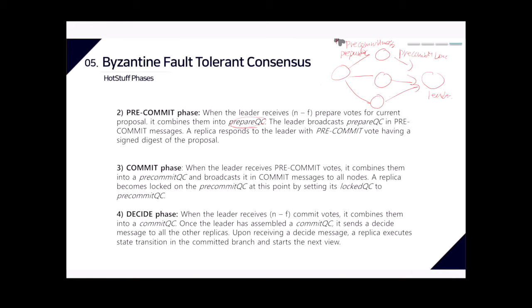The Commit phase is similar to the Pre-Commit phase. When the leader receives pre-commit votes, it combines them into a pre-commit QC and broadcasts it in a commit message to all nodes. A replica becomes locked on the pre-commit QC at this point by setting its locked QC to the pre-commit QC. In the Decide phase, when the leader receives N-F commit votes, it combines them into a commit QC and sends a decide message to all replicas. Upon receiving the decide message, a replica executes the state transition in the committed branch and starts the next view.